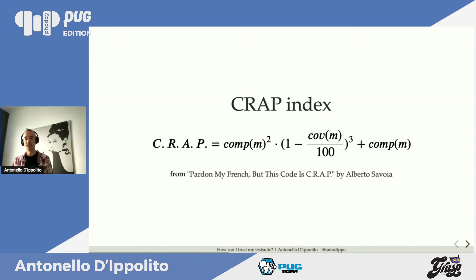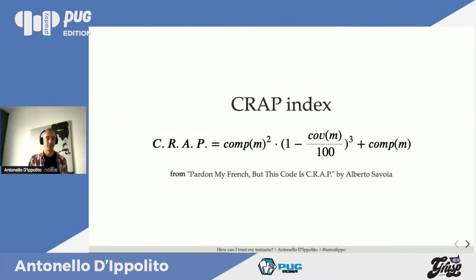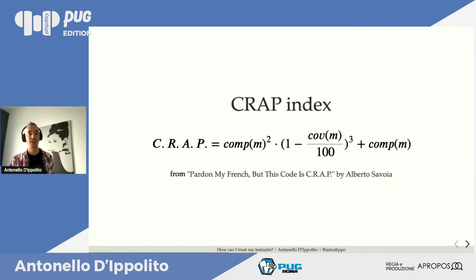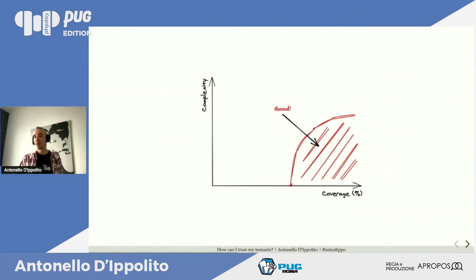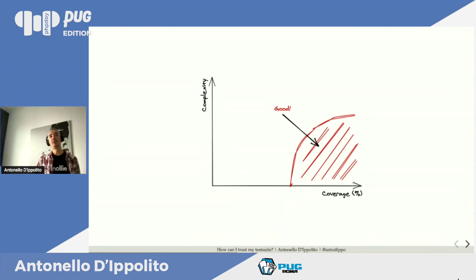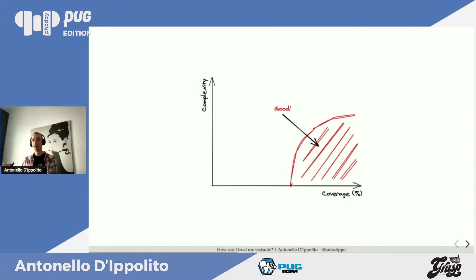Il CRAP index è stato introdotto da Alberto Savoia — ho linkato l'articolo nella slide. CRAP è un acronimo che significa 'Change Risk Analysis and Predictions'. Riportando il grafico di PHPUnit con le nostre classi distribuite per complessità e coverage, la parte buona dove dovremmo far finire tutte le classi è nell'angolo in basso a destra: complessità bassa e code coverage alta, o possibilmente entrambe.